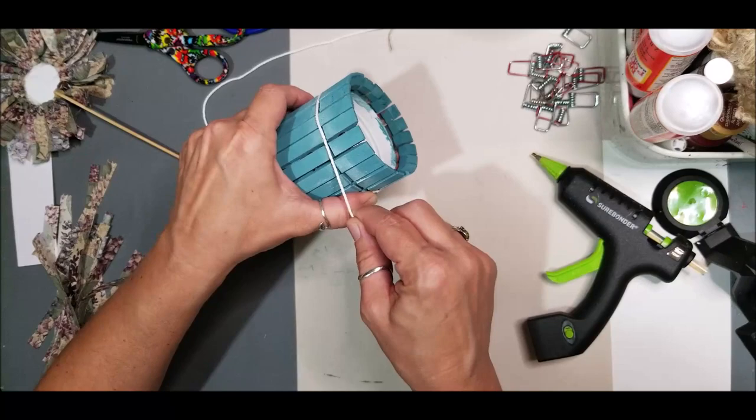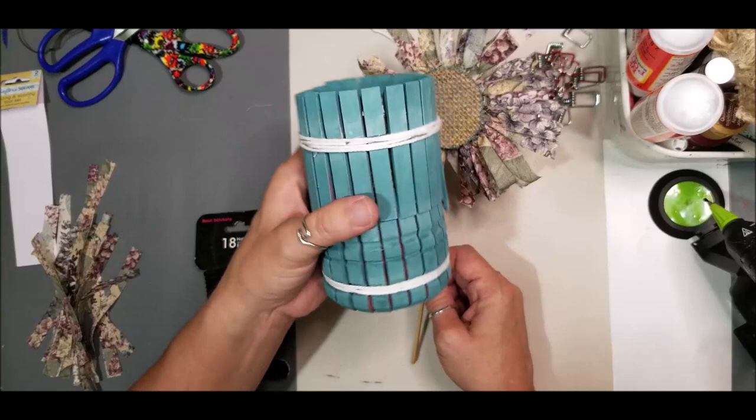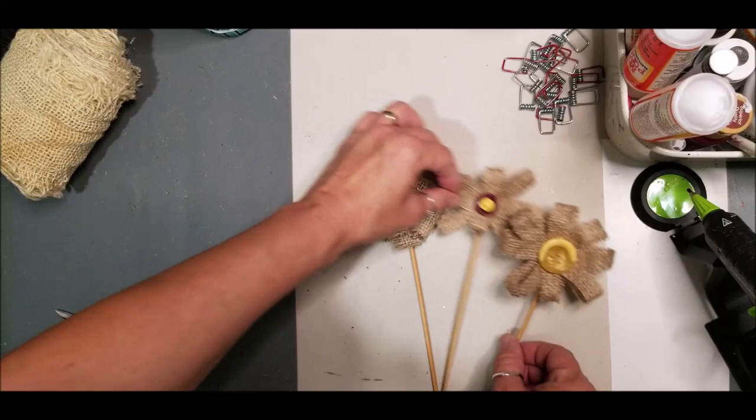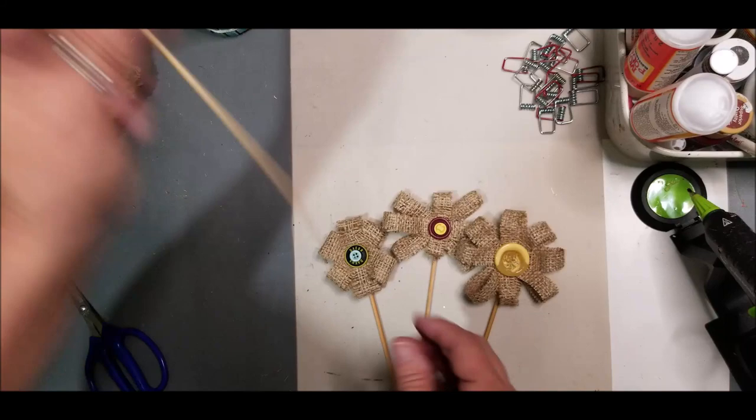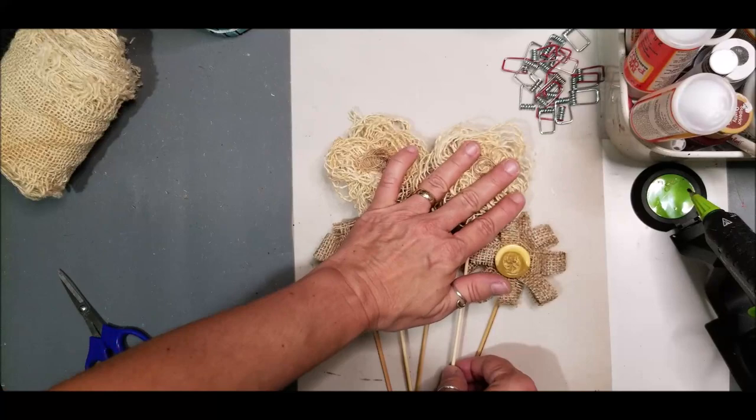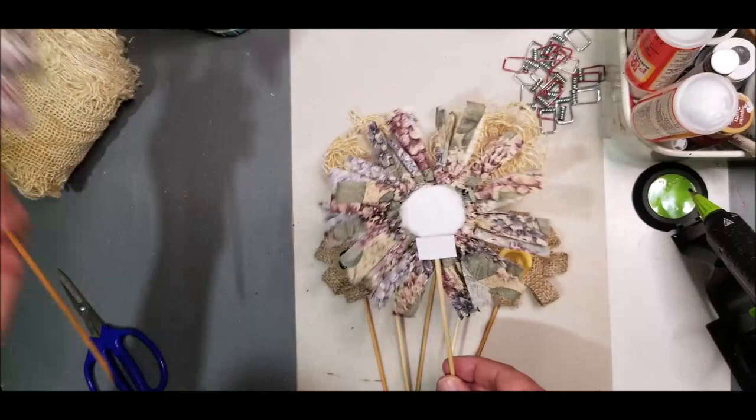My little Agave barrel base is done. Here's our burlap strip flowers that we made, kind of like daisies. I just love the button on them. Here are our burlap bushed-out rosette daisies that we made. And here are our ponytail holder rag tie sunflowers.